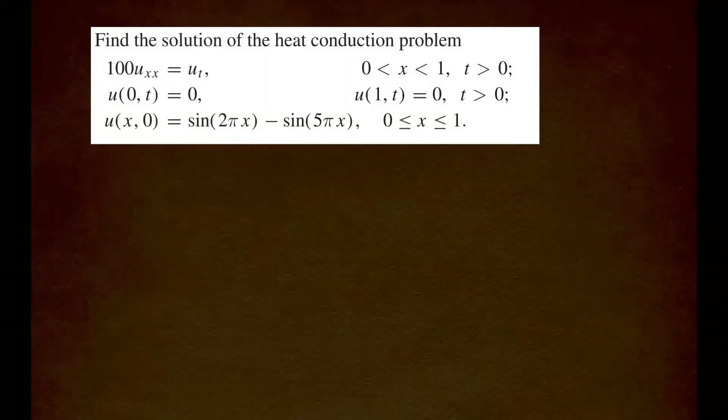Right, so now we're going to take a look at this problem, where we're going to find the solution of the heat conduction problem. So here's our partial differential equation. It is in the form that we want. Remember, you want your partial differential equation to be in this standard form: u sub t is equal to alpha square u sub xx, where alpha square is the diffusivity constant. So in that case, that happens to be 100 in this case. So alpha square is going to be 100.